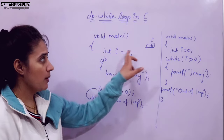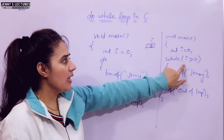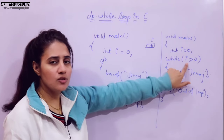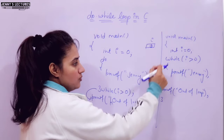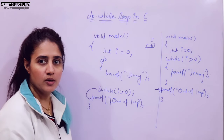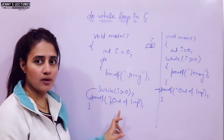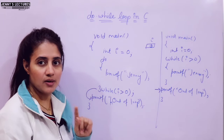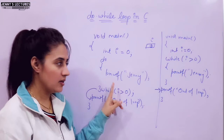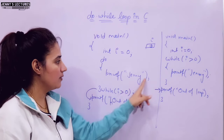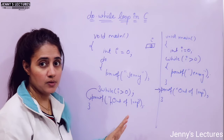Let me write the same program with a while loop. I am initializing i with 0. In while, we check the condition before entering the loop: while i greater than 0. Is i greater than 0? No. So it will not execute the body of the loop at all. It will go out of the loop, and the output will be 'out of loop' only. But in do-while, you get 'jenny' and then 'out of loop'. So now we see the difference.